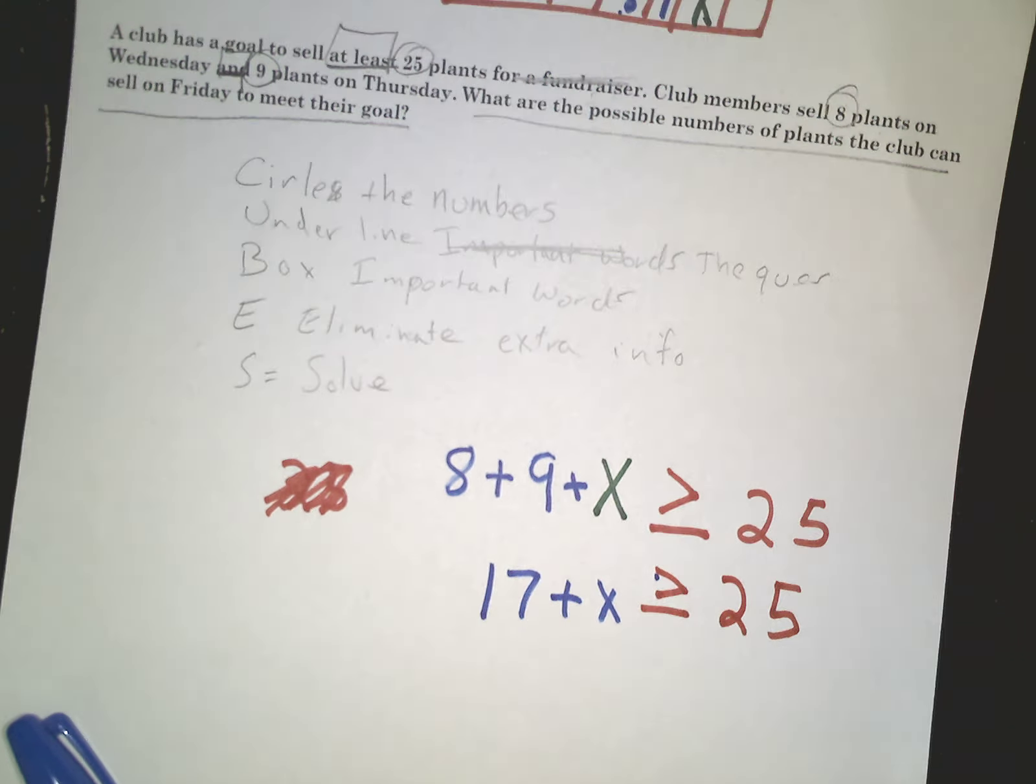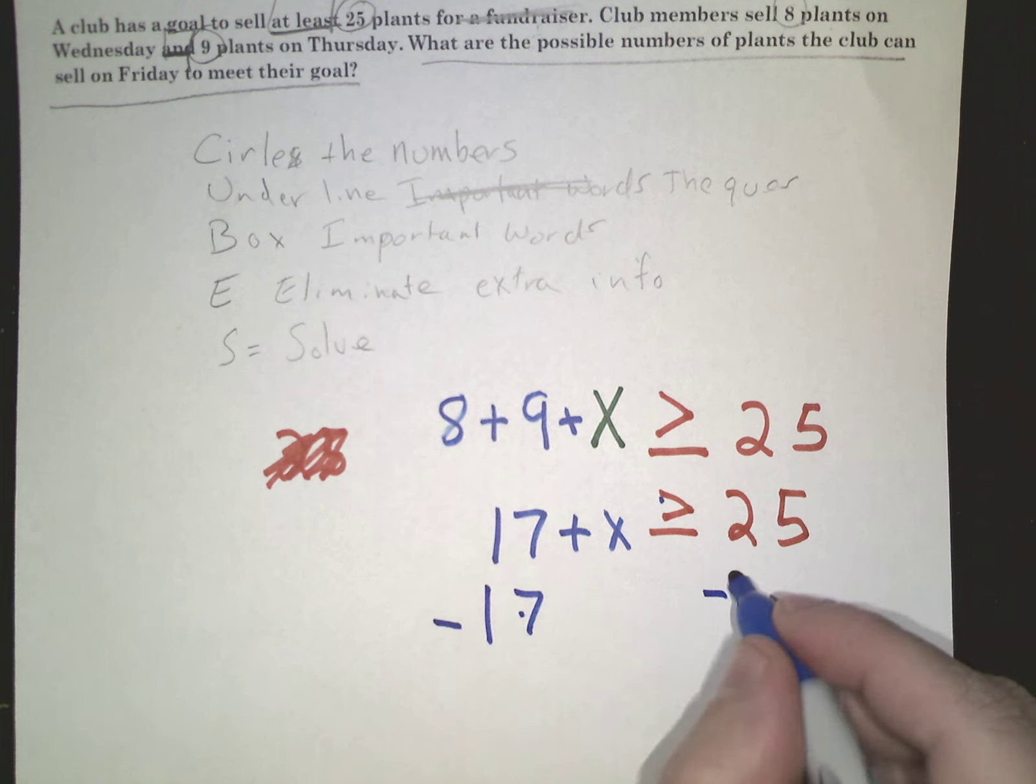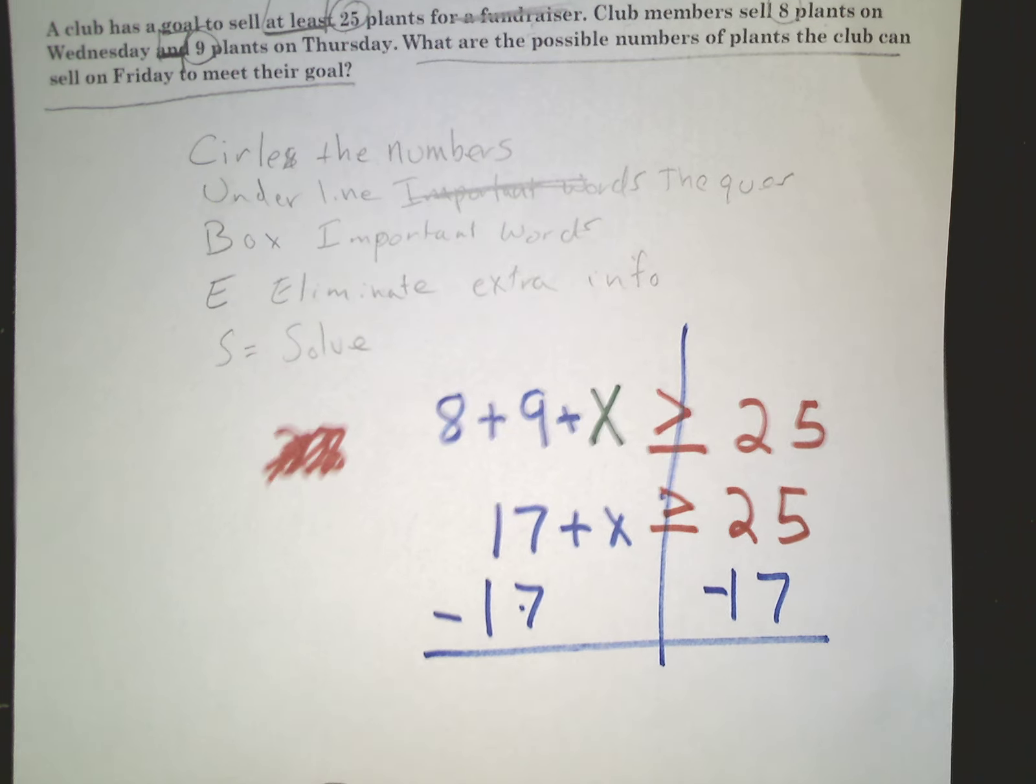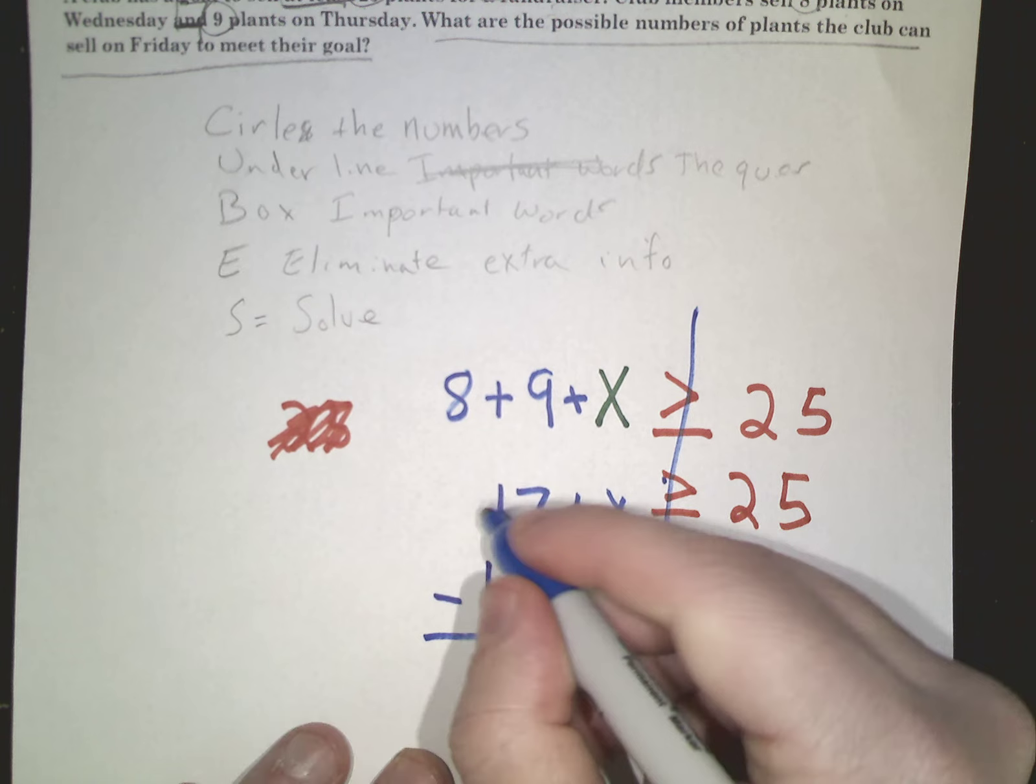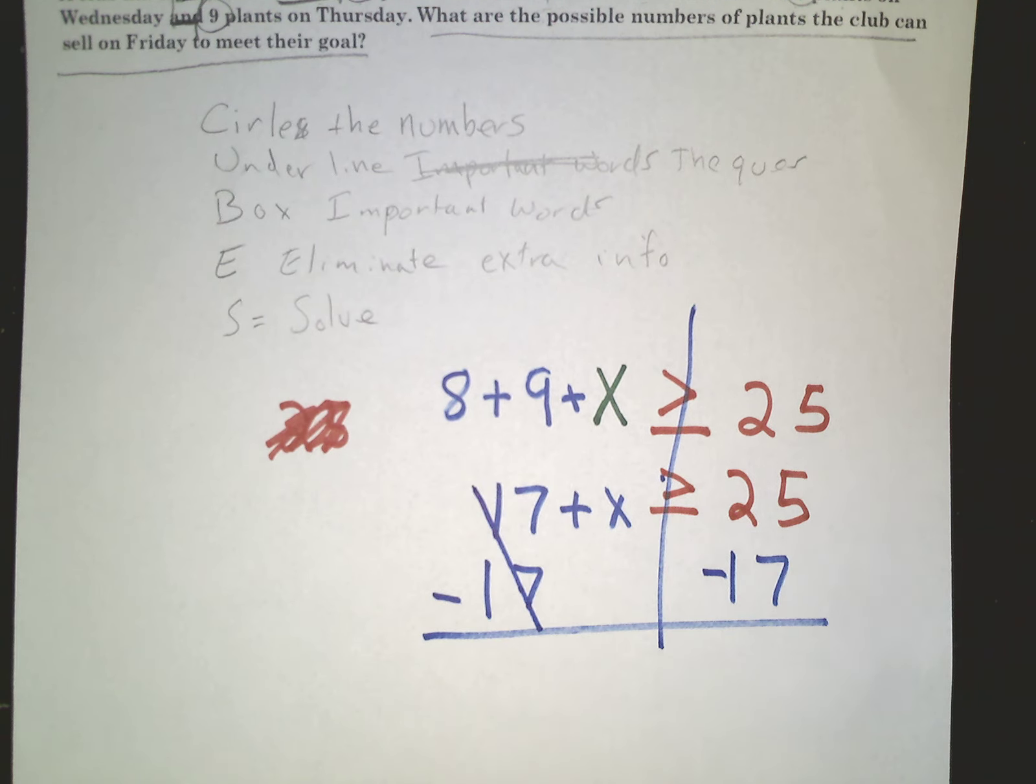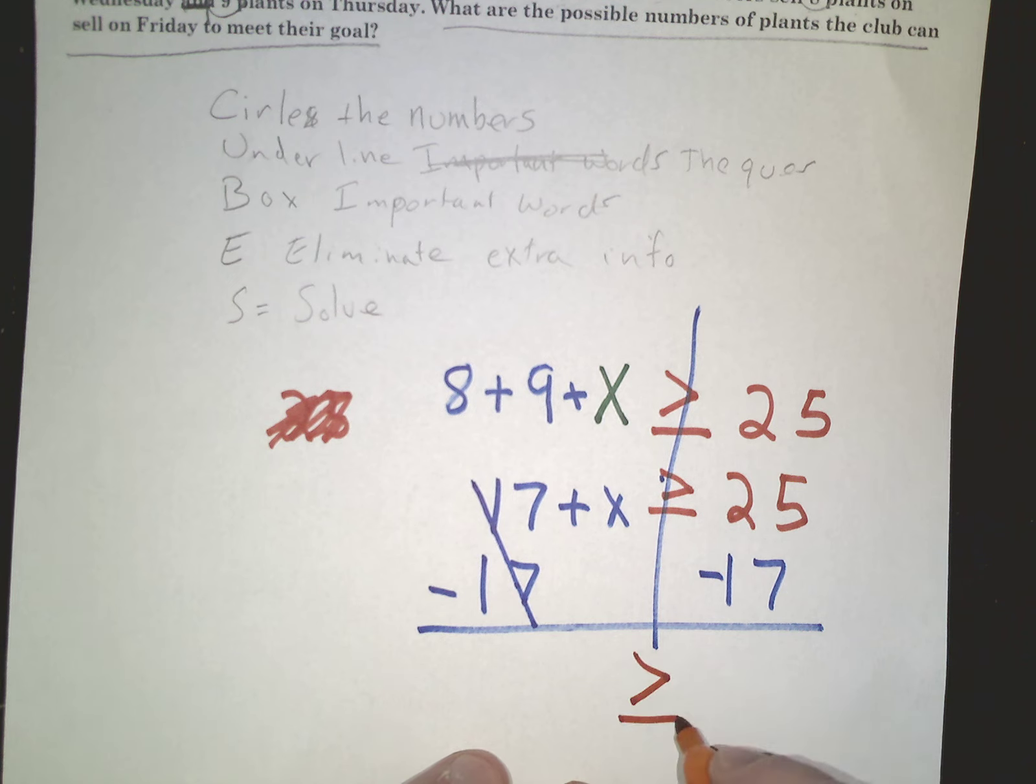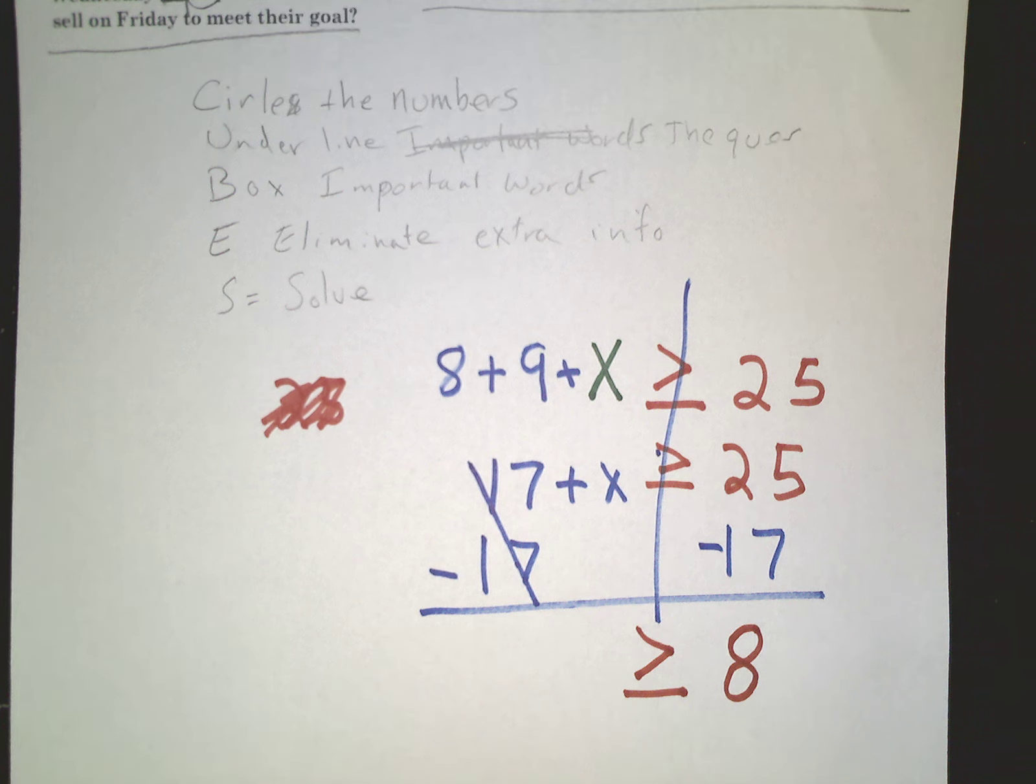I've got to isolate the variable still. Same idea: I got to get rid of that 17. That's a positive 17, so I'll use a negative 17 here and a negative 17 here. Both sides of that inequality. This becomes zero, we can bring down the inequality. 25 minus 17. Know your math, use the calculator if you don't want to do this in your head. 8.